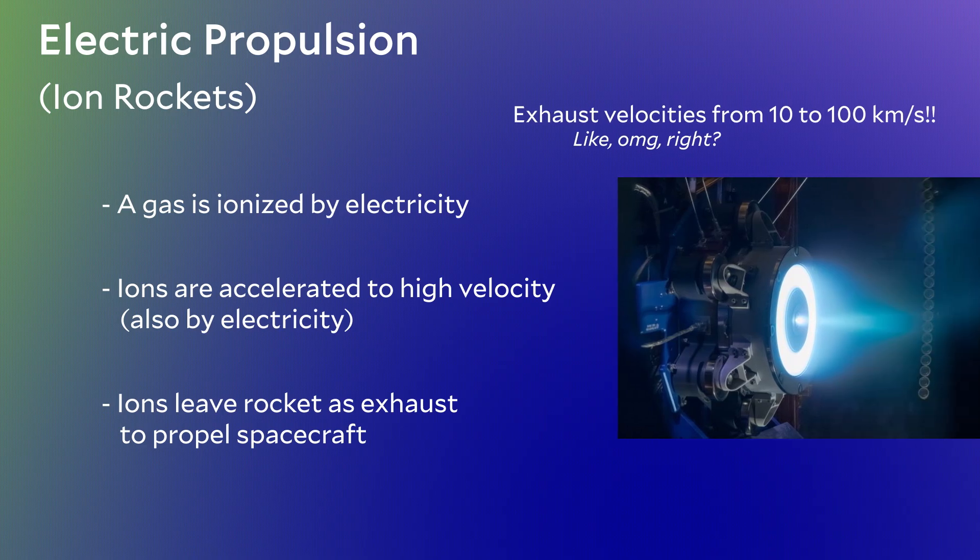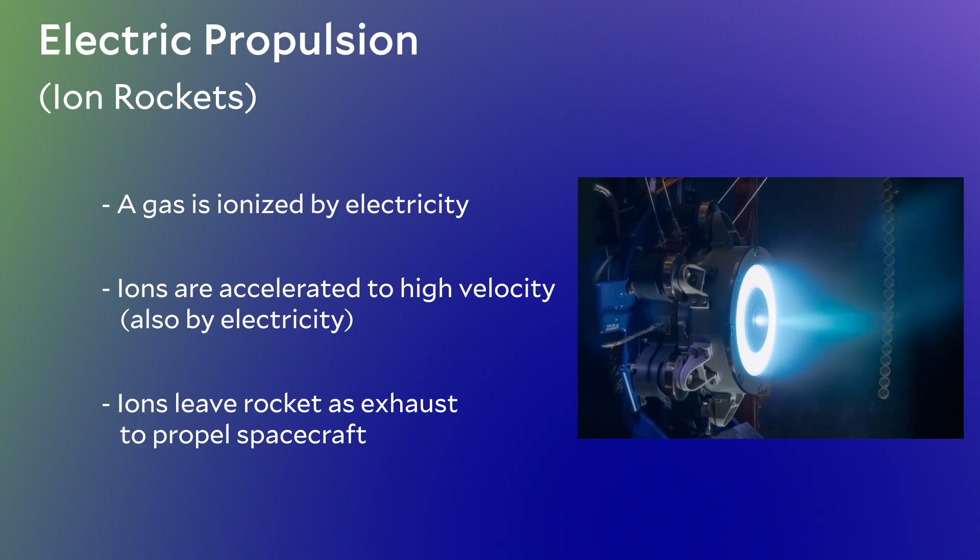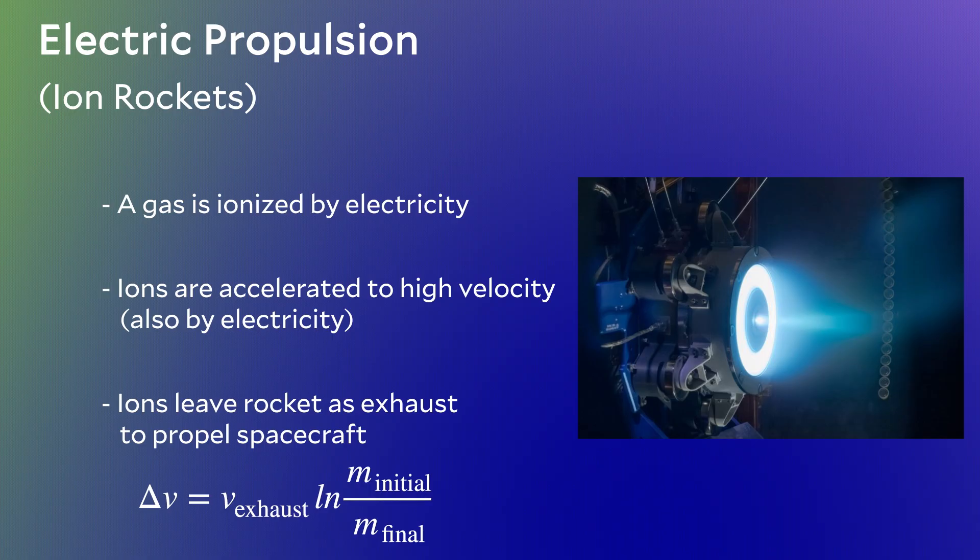You know, there's always a catch, right? The amount of mass an ion rocket can accelerate is tiny. And so going back to the rocket equation, the initial to final mass for an ion rocket is nearly the same. That means the ratio of initial to final mass is close to one and the natural logarithm of one is zero. In other words, despite the amazing exhaust velocity value, the final delta V of an ion rocket is actually pretty small.